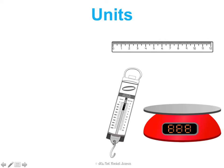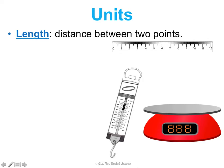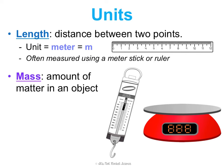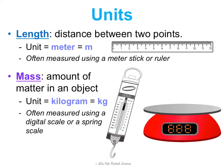Here are the units I want to highlight. First, measuring length — the distance between two points. The SI unit for length is meters, abbreviated as a little m, and it's often measured using a meter stick or a ruler. Mass is the amount of matter in an object, and the SI unit for mass is kilogram, abbreviated kg. We often find mass using a digital scale or a spring scale.